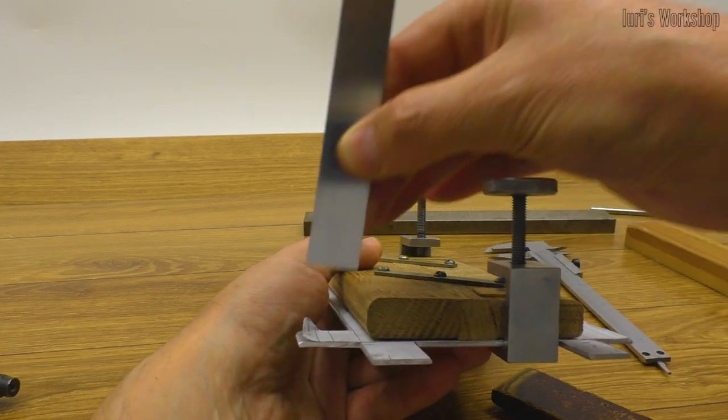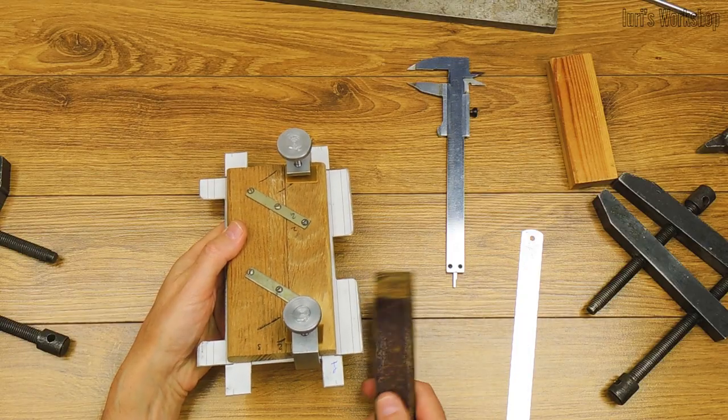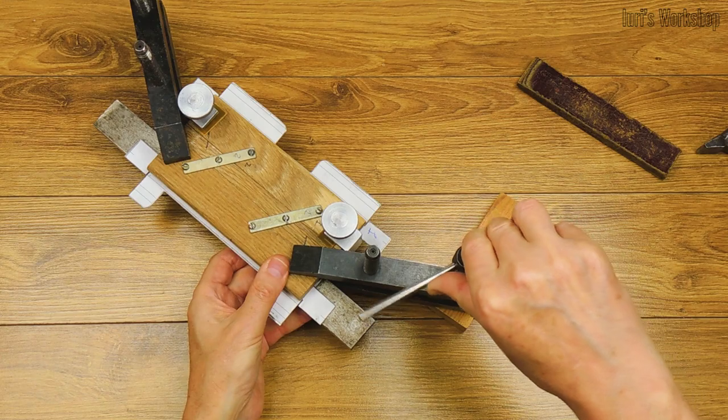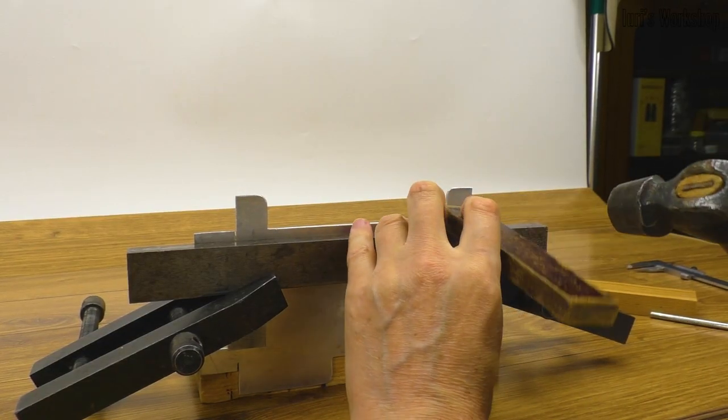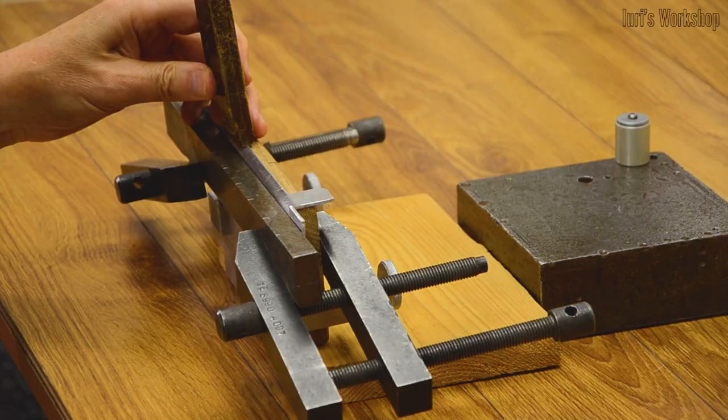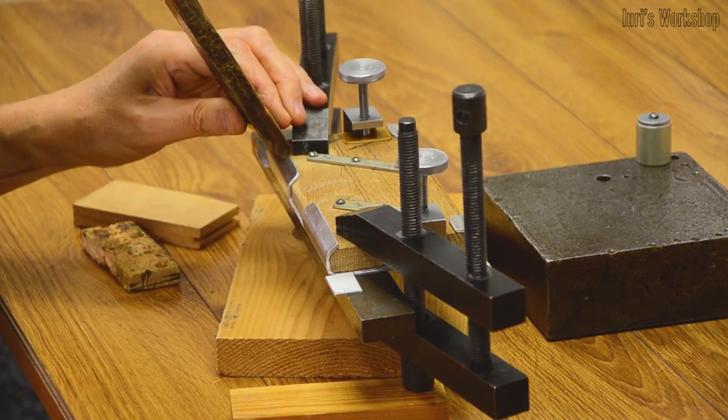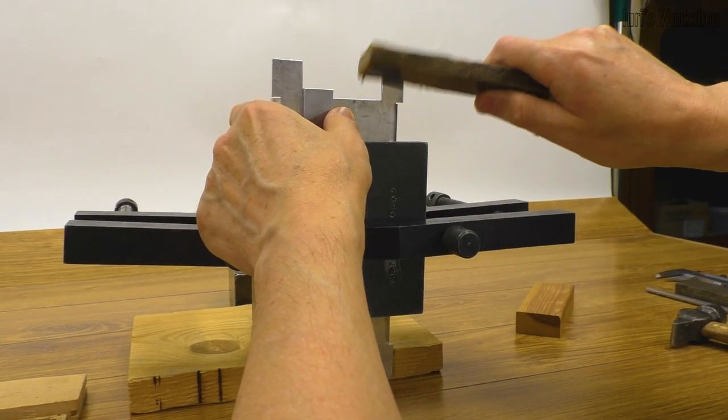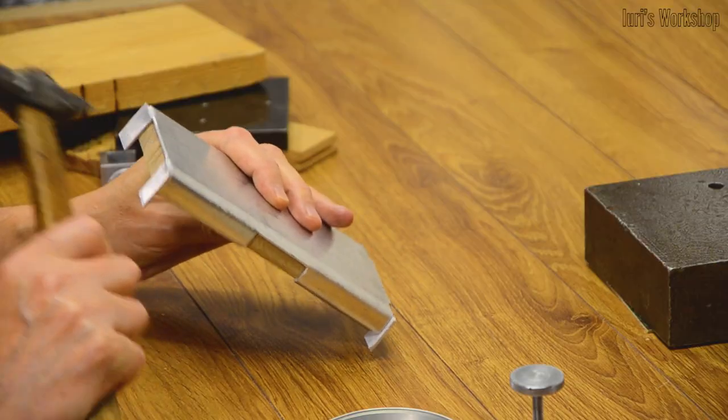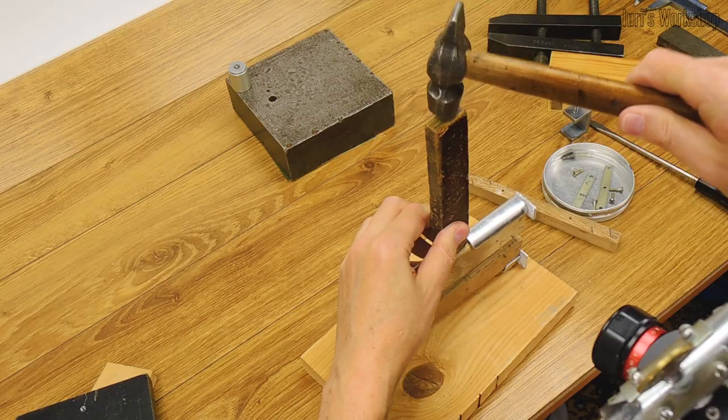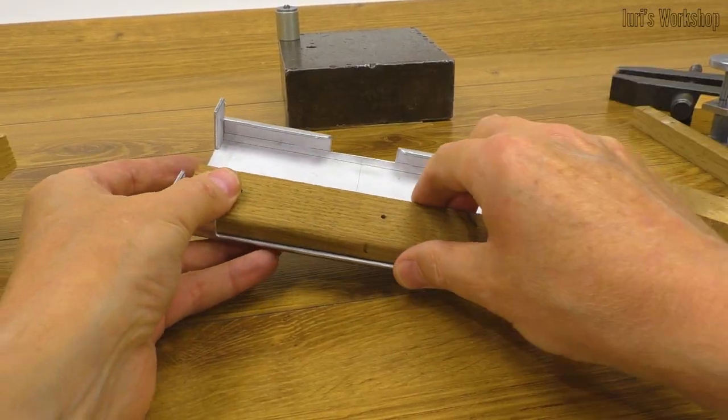When using a template for bending complex shapes, the main thing is to correctly fix the workpiece before the first bend. In the future, the linear dimensions and radii of bending should be provided by the geometry of the template itself. Since the template was made of three parts, it was easy to remove from the case.